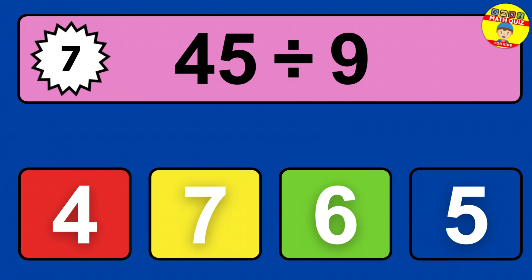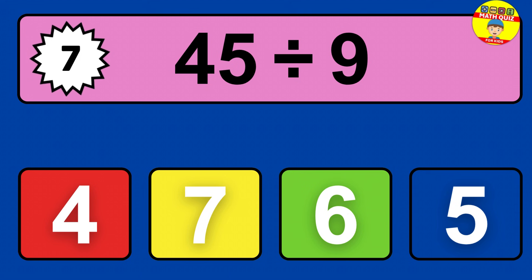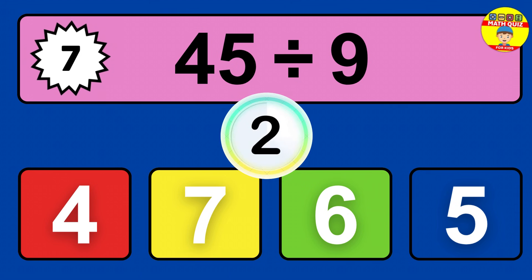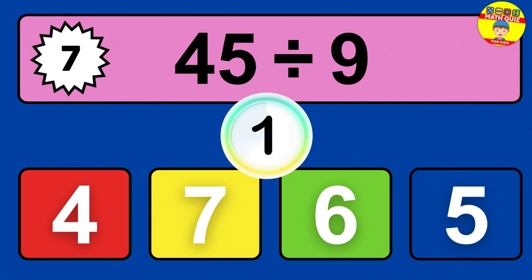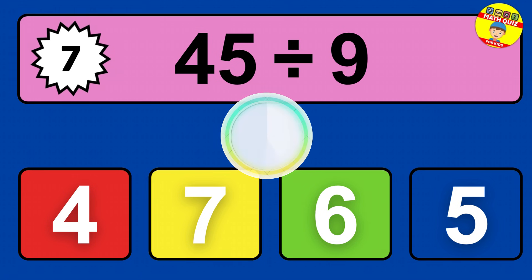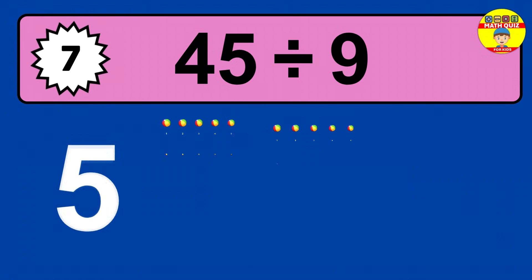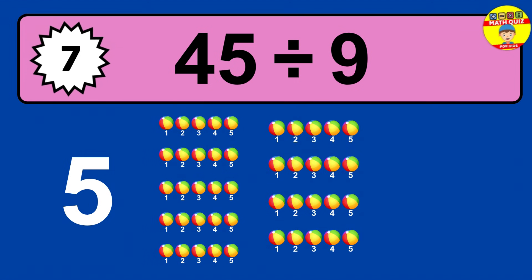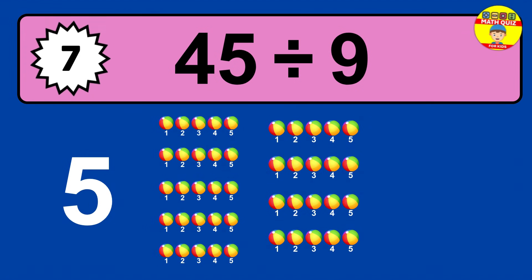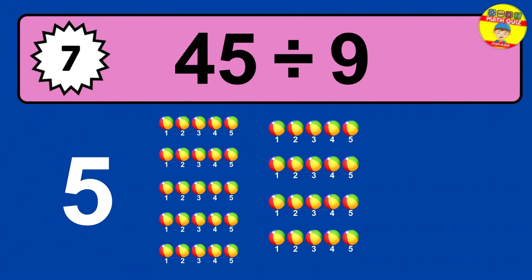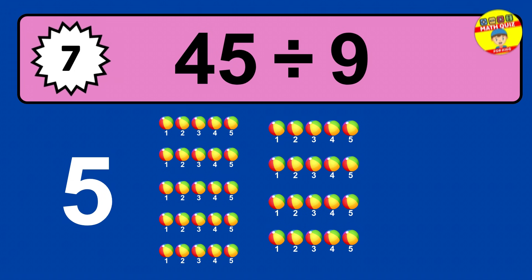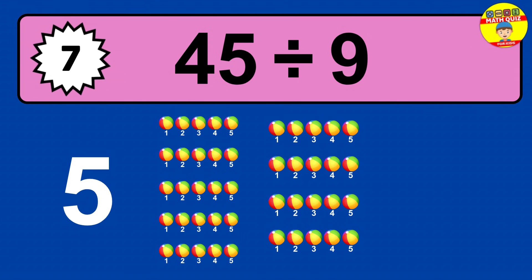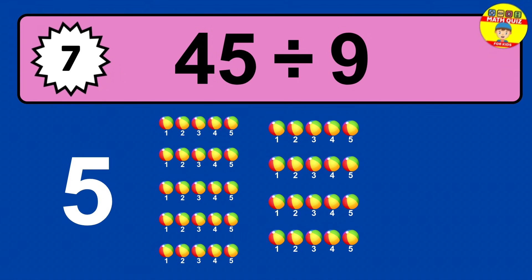45 divided by 9 — time to think. Let's go to the solution. Divide the number 45 by 9. Each group contains 9 units, so dividing 45 by 9 results in 5 equal groups. Thus, the result is 45 divided by 9 equals 5.